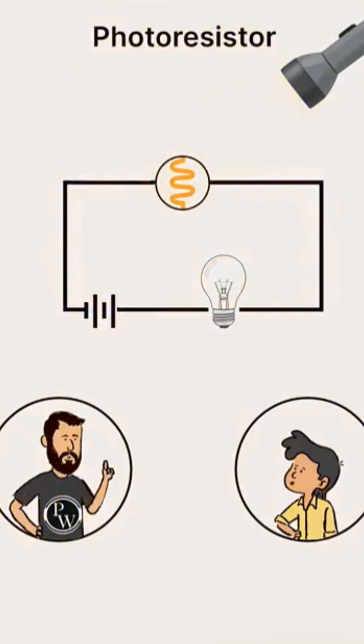Current flows in light and in darkness the resistance rises so no current flows, but we want the light on at night, not during the day.